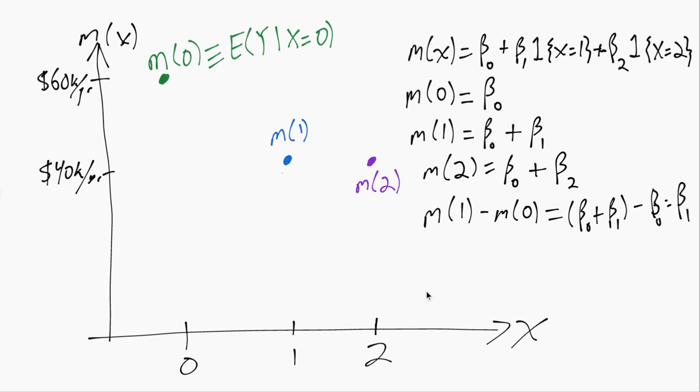If we subtract the first line from the third line, similarly that lets us get rid of that beta naught, and we get beta 2.